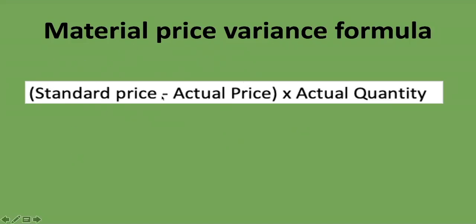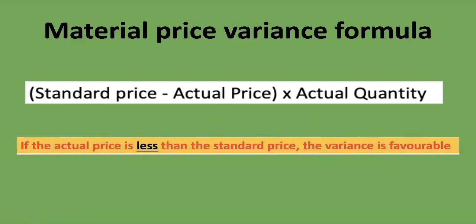We start with the standard price because we are using it to measure our actual price. If the answer you get after doing these calculations — standard price minus actual price, multiplied by actual quantity — is negative, then you know that it's unfavorable. If the answer is positive, the variance is favorable.